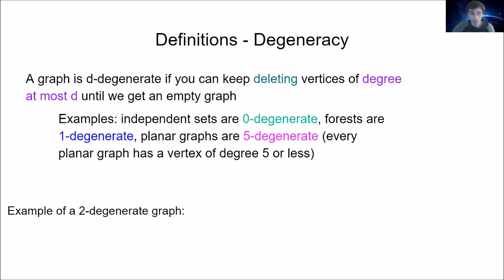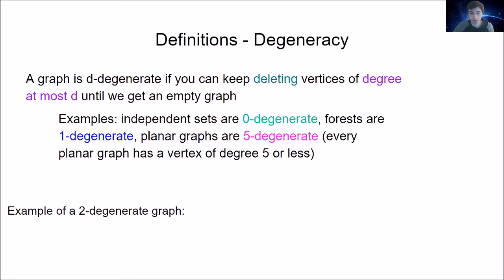Let me give a quick example of a 2-degenerate graph. I remove one leaf of degree one, then another leaf of degree one, then a vertex of degree two, another vertex of degree two, a vertex of degree one, and finally a vertex of degree zero. So that graph is a 2-degenerate graph.